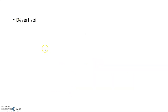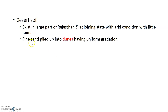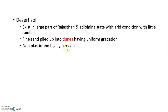Desert soil receives very little rainfall. Fine sand is piled up into dunes. Desert soil is non-plastic and highly pervious, meaning water drains easily.